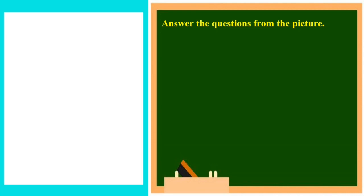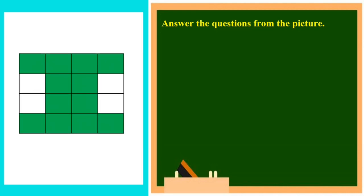Now you will get another picture and you have to answer accordingly. Here you can see another picture. The question is: how many squares are there in this grid? Counting — 1, 2, 3, 4, 8, 12, 16 — totally 16 squares are there.